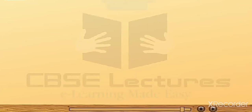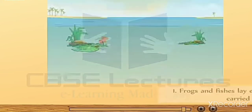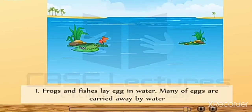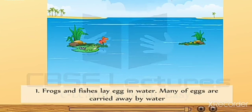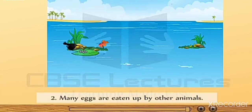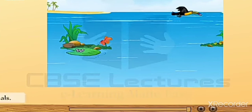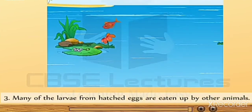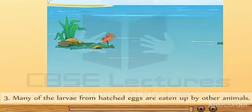Why do frogs and fishes lay hundreds of eggs at a time? When frogs and fishes lay eggs in water, many of the eggs are carried away by water. Many eggs are eaten up by other animals, and many of the larvae from hatched eggs are also eaten by other animals.